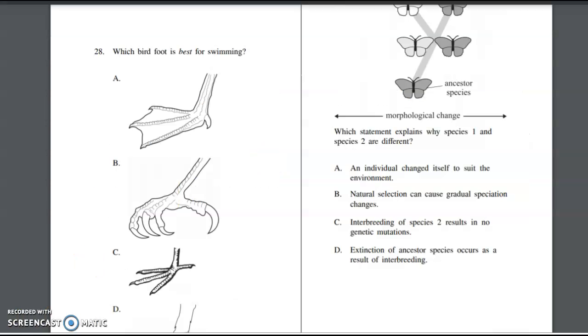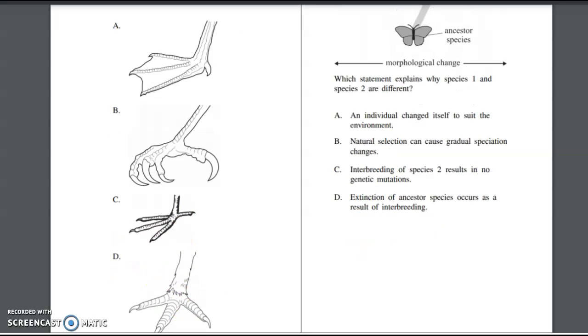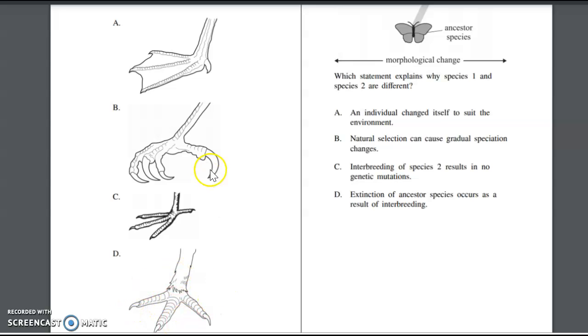Number 28, we're looking at adaptations. It says which bird foot is best for swimming? There's claws for catching things, those are spread out for not squishing down, and that looks like an ostrich foot there. Swimming would need to be able to push water back. The webbing in this foot would make that more suitable for swimming, so A would be our correct answer.